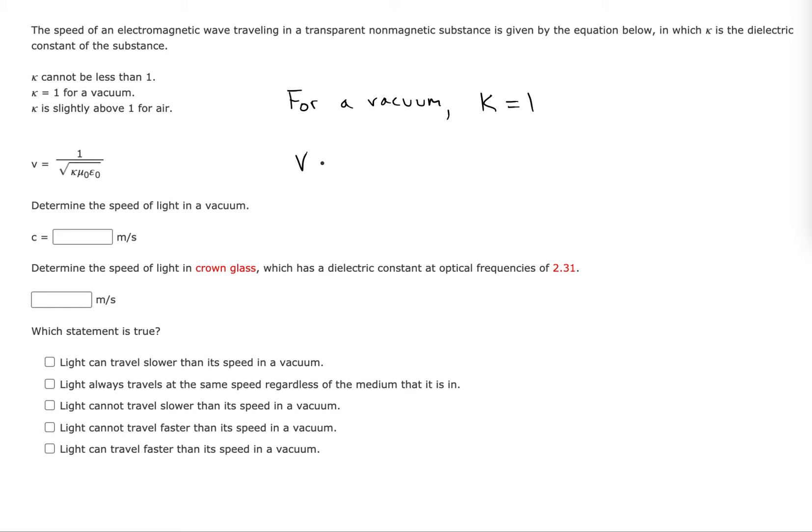So if we plug that in, we'll get 1 over the square root of 1 times mu naught times epsilon naught. That is the permeability of free space and the permittivity of free space, respectively.